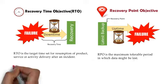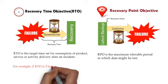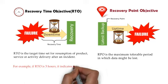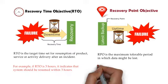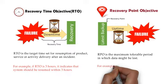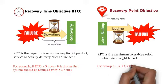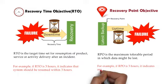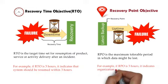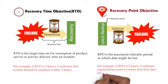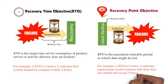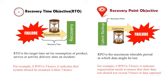For example, if RTO is 3 hours, it indicates that the system should be resumed within 3 hours. On the other hand, for the example of RPO, if RPO is 3 hours, it indicates the organization needs to ensure that their data loss should not exceed 3 hours of data captured.